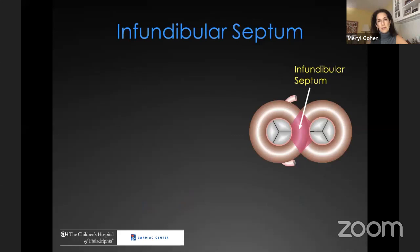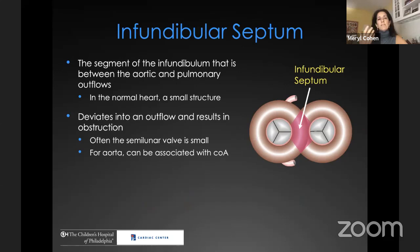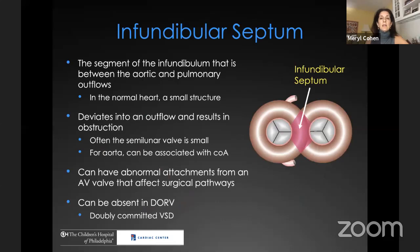The infundibular septum is the segment of the infundibulum between the aortic and pulmonary outflows. In the normal heart this is a very small structure, but in patients with malalignment it deviates into an outflow and results in obstruction. Often the semilunar valve on the other side of that deviation is small. For the aorta, you can also have distal obstruction such as coarctation or interruption of the aortic arch, abnormal attachments of an AV valve to the infundibular septum, or the infundibular septum can be absent, as seen in tetralogy of Fallot and in doubly committed VSD.